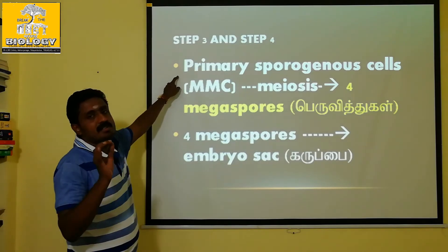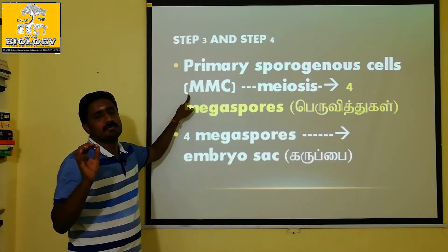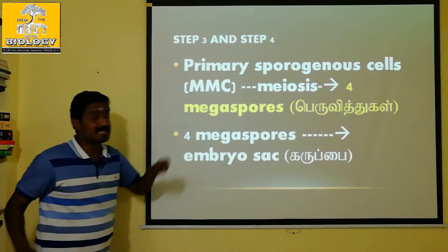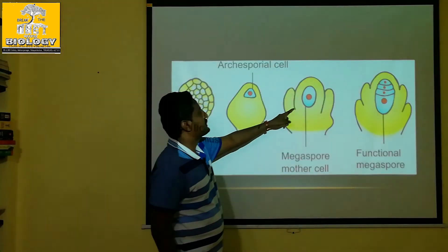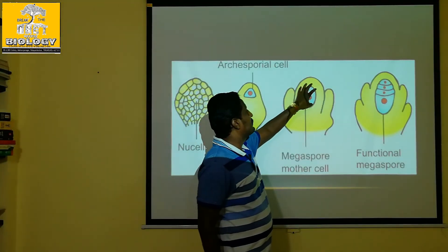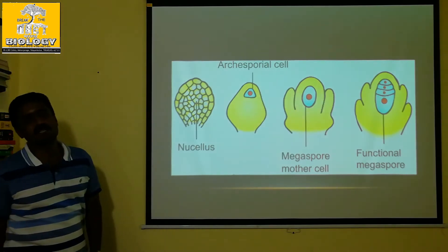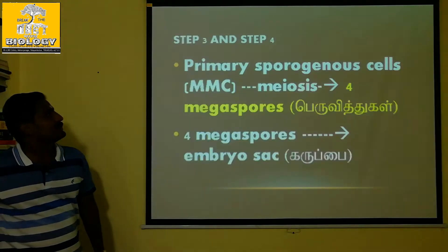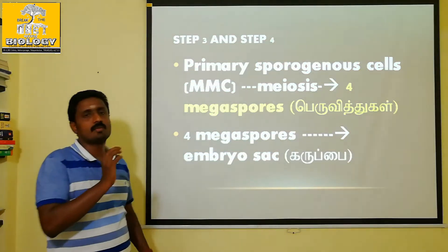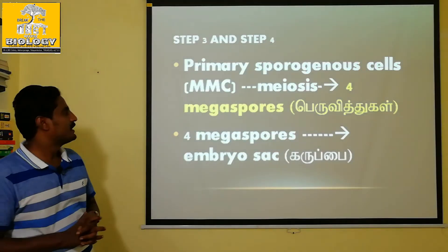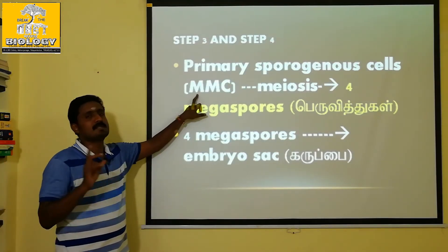The primary sporogenous cells function as the Megaspore mother cells. Primary sporogenous cells are equivalent to microspore mother cells. This is step three — the formation of the Megaspore mother cells (MMC).